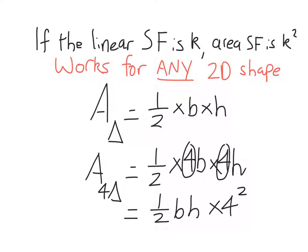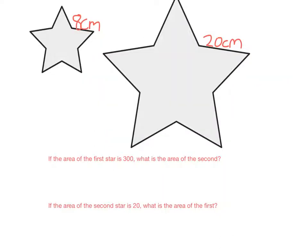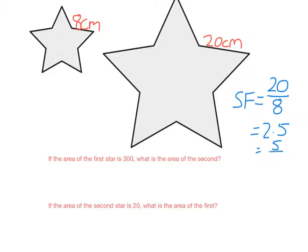Let's look at using this to solve some problems. You'll get two similar figures — and they have to be similar for this to work because we need a linear scale factor, meaning all sides must be in proportion. So if the area of the first star is 300, we can find the area of the second star without hard calculations. The first thing we need to do is find the linear scale factor: that's 20 over 8, which is 2.5 or 5 over 2.